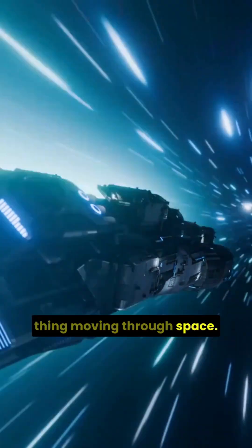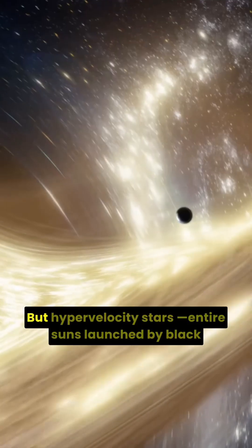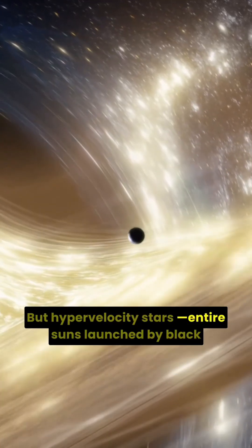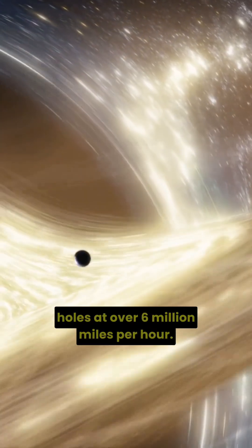Let's start with the fastest thing moving through space. Not rockets, not stars, but hypervelocity stars. Entire suns launched by black holes at over 6 million miles per hour.